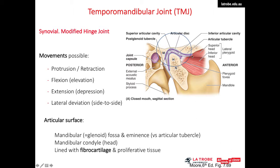The articular surfaces of the joint are the mandibular fossa, also known as the glenoid fossa, and the mandibular eminence or tubercle. The term glenoid fossa is also used in dentistry but this can be confused with the glenoid fossa of the shoulder joint. As anatomists, we use mandibular fossa for the articular surface of the temporomandibular joint.